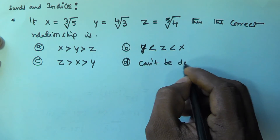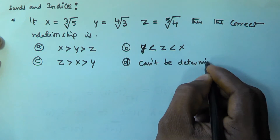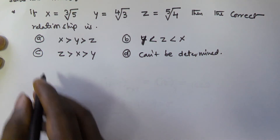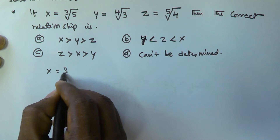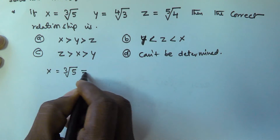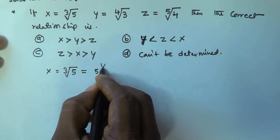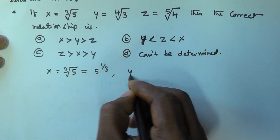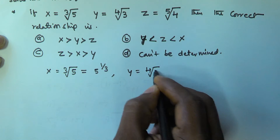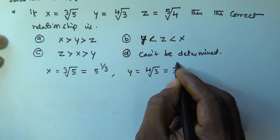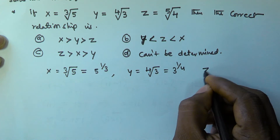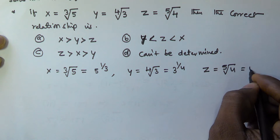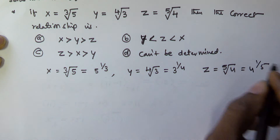So x = ∛5 can be written as 5 to the power of 1/3. y = ⁴√3 is going to be equal to 3 to the power of 1/4. And z = ⁵√4 is equal to 4 to the power of 1/5.